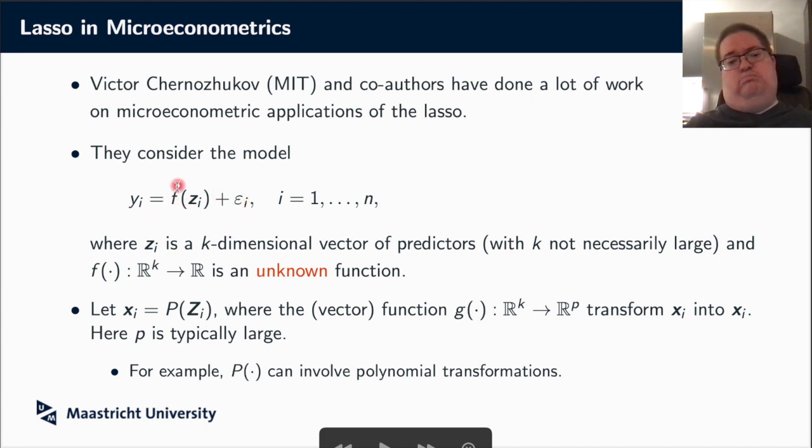Now, of course, there's no direct link to estimating linear models with the lasso. So what they argue is, well, you can probably come up with a linear model that is a nice approximation to this model. And in particular, what you can do is you can transform your z into new regressants, x.